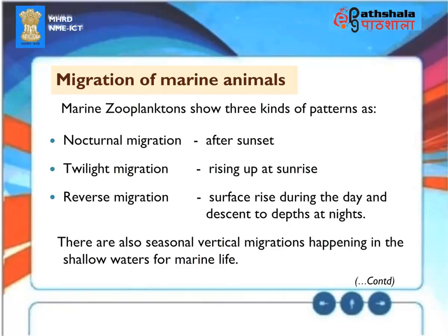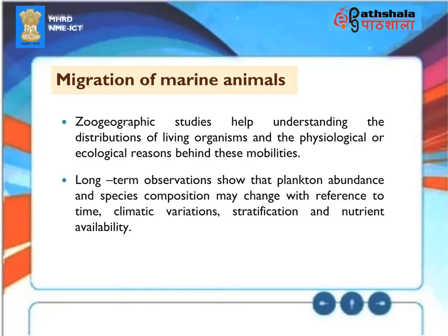Migration of Marine Animals: Marine zooplanktons show three kinds of migration patterns — Nocturnal migration (after sunset), Twilight migration (rising up at sunrise), and Reverse migration (surface rise during the day and descent to depths at night). There are also seasonal vertical migrations happening in the shallow waters for marine life. Zoogeographic studies help understand the distributions of living organisms and the physiological or ecological reasons behind these mobilities. Long-term observations show that plankton abundance and species composition may change with reference to time, climatic variations, stratification, and nutrient availability.